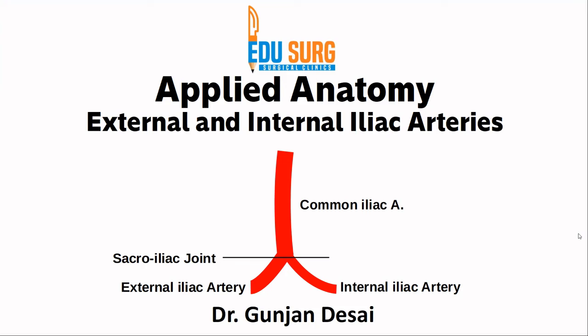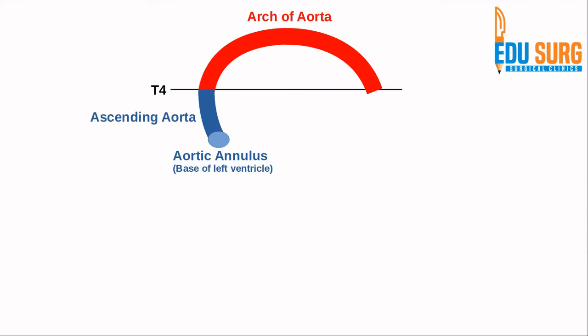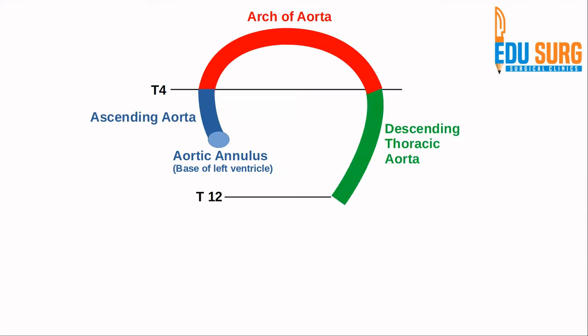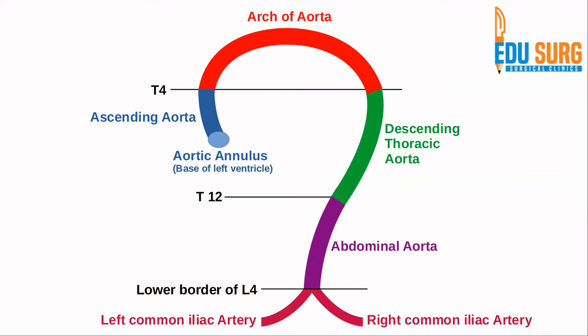Hello everyone and welcome to EduSearch Clinics. I am Dr. Gunjan Desai and today we are going to continue our vascular anatomy series. We have already covered the ascending aorta, the arch of aorta, the descending thoracic aorta from T4 to T12, and the abdominal aorta which begins after the aorta crosses the diaphragm at T12. At the lower border of L4, it divides into the left and right common iliac artery — as discussed in our previous video on parts of the aorta.